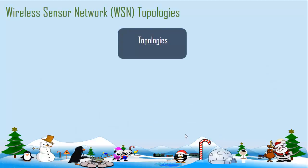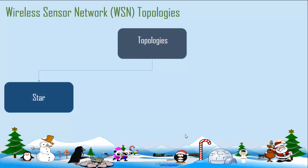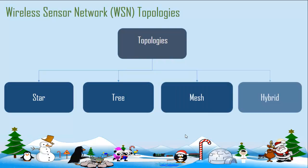Now, we discussed about topologies. Let us elaborate about what topologies mean. So these are various types of topologies that we can witness. It's either a star topology or tree topology and mesh topology or hybrid of these topologies.